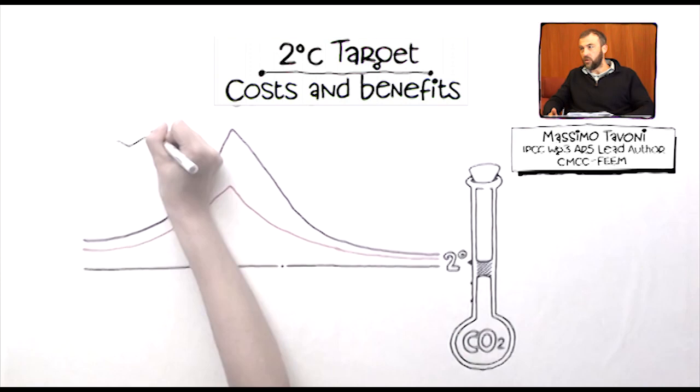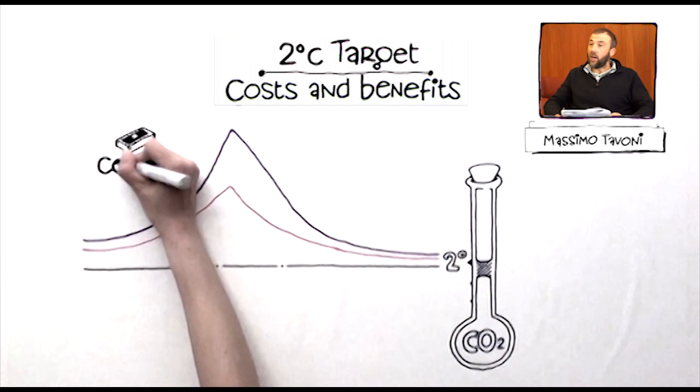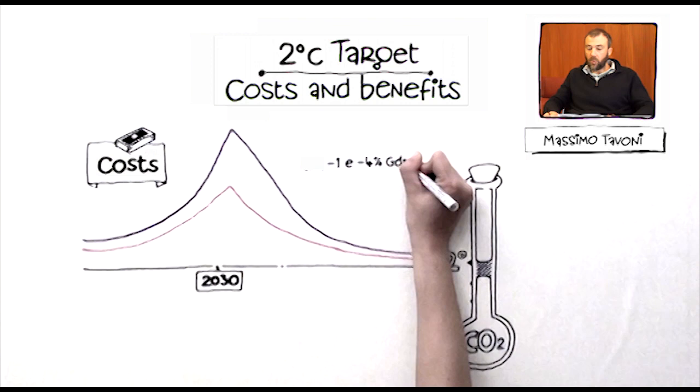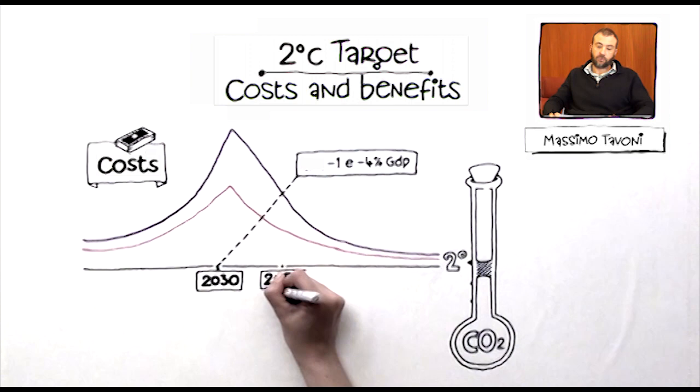One of the key things that we looked at is what are the economic costs of achieving policies that reduce emissions to 2 degrees, 2.5 degrees and so forth. The range varies widely across studies. If we want to achieve 2 degrees, the cost is quantified in the range between maybe 1 to 4% GDP loss in 2030 and between 2 and 6% in 2050. Lower targets in terms of higher temperatures would require much less effort.